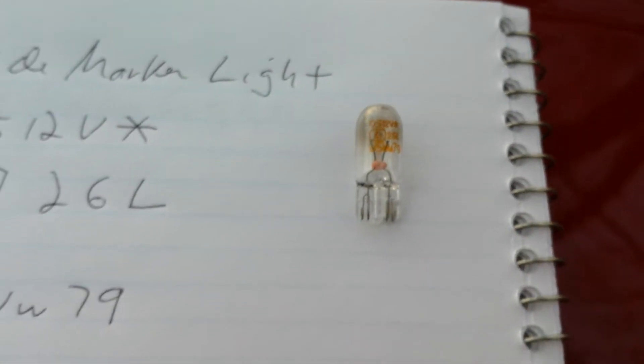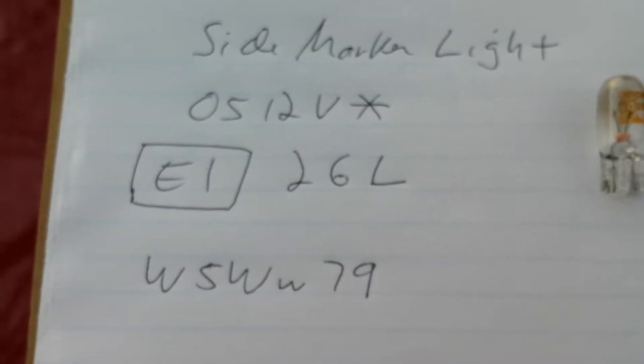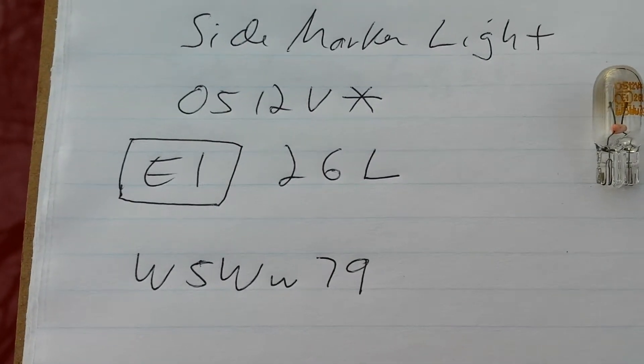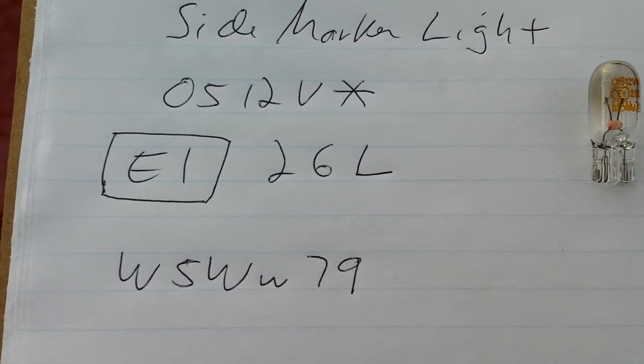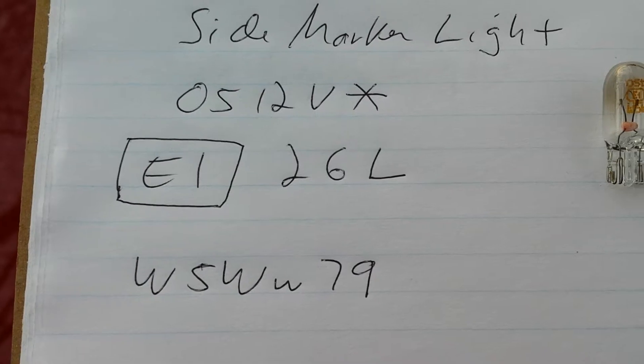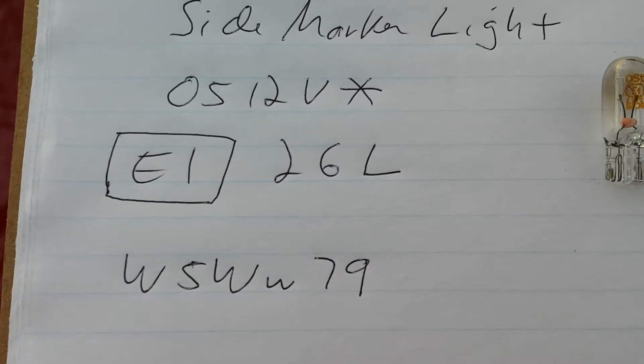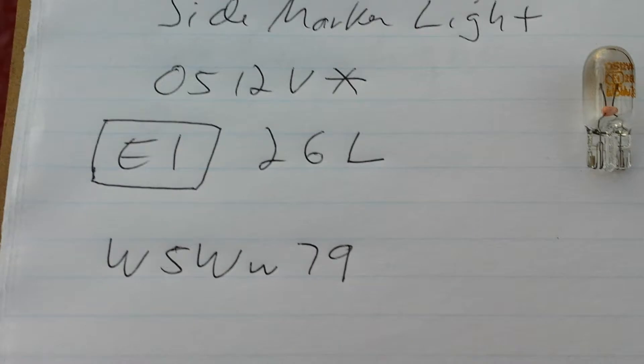That's the side marker light and here's everything that's written on it exactly as it's written for those of you who are bulb aficionados and you want to trace it out before you take everything apart and decide what bulb you want to put in.